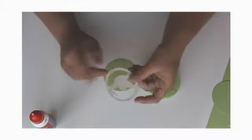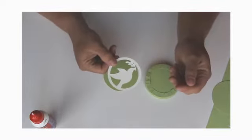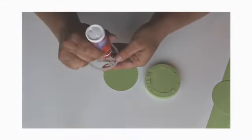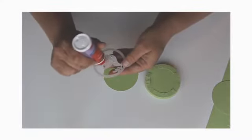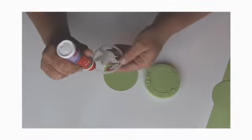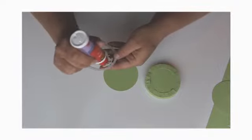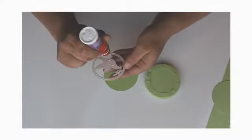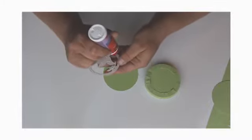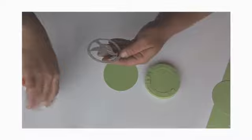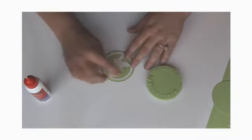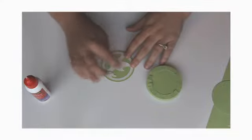Now we're going to take the design that you've chosen. I chose to do the Dove. There's also the Virgin Mary silhouette that you can choose from. I'm going to add glue to the back of the design. Then center it on the lid and glue it down.